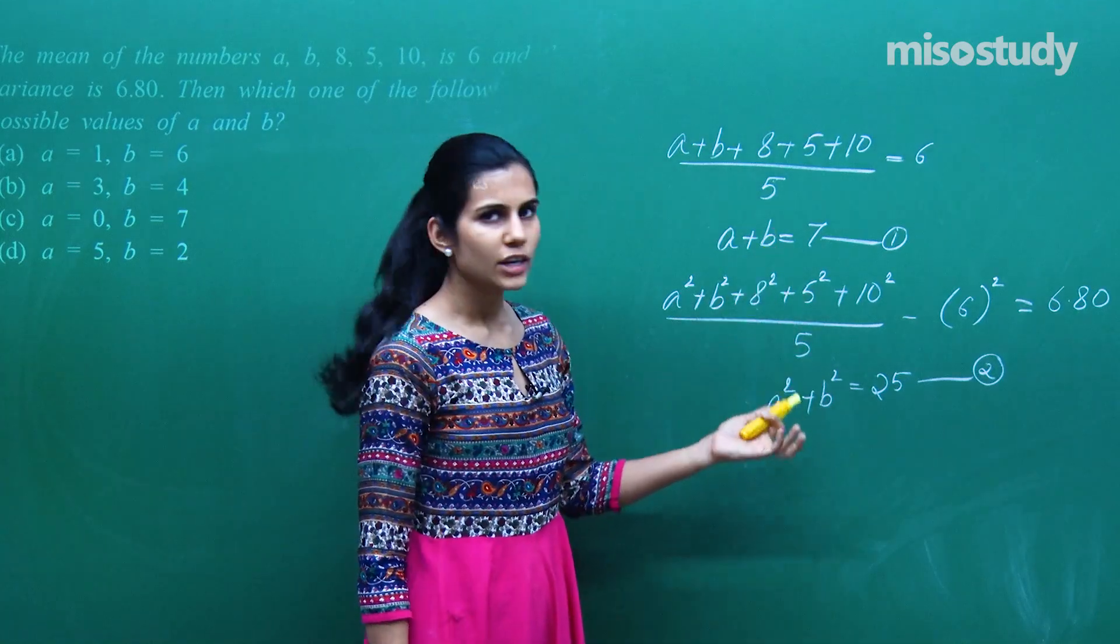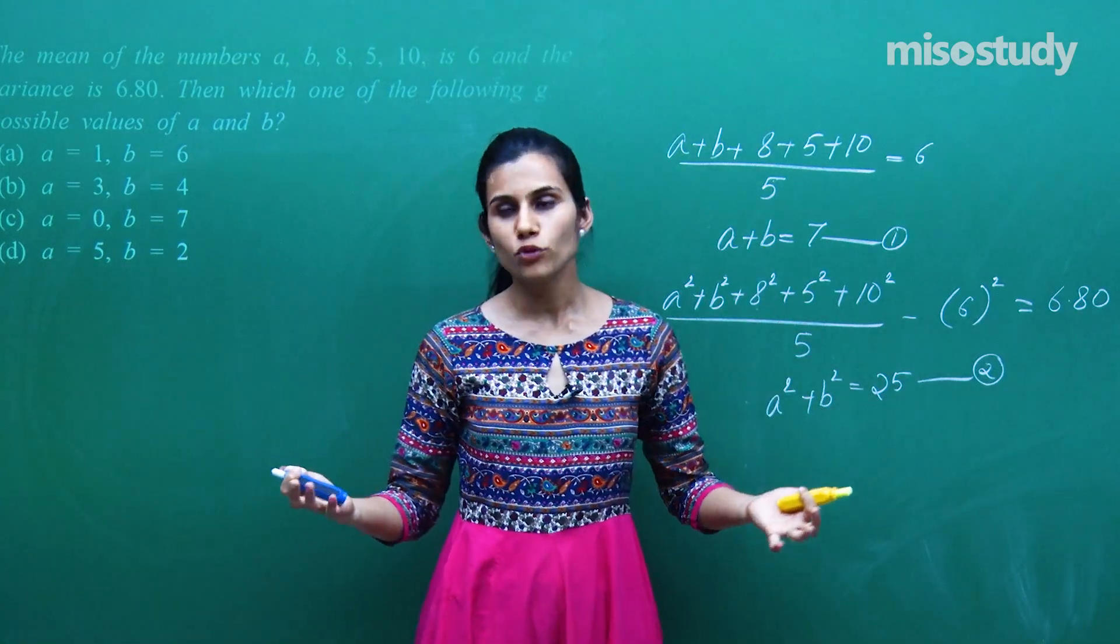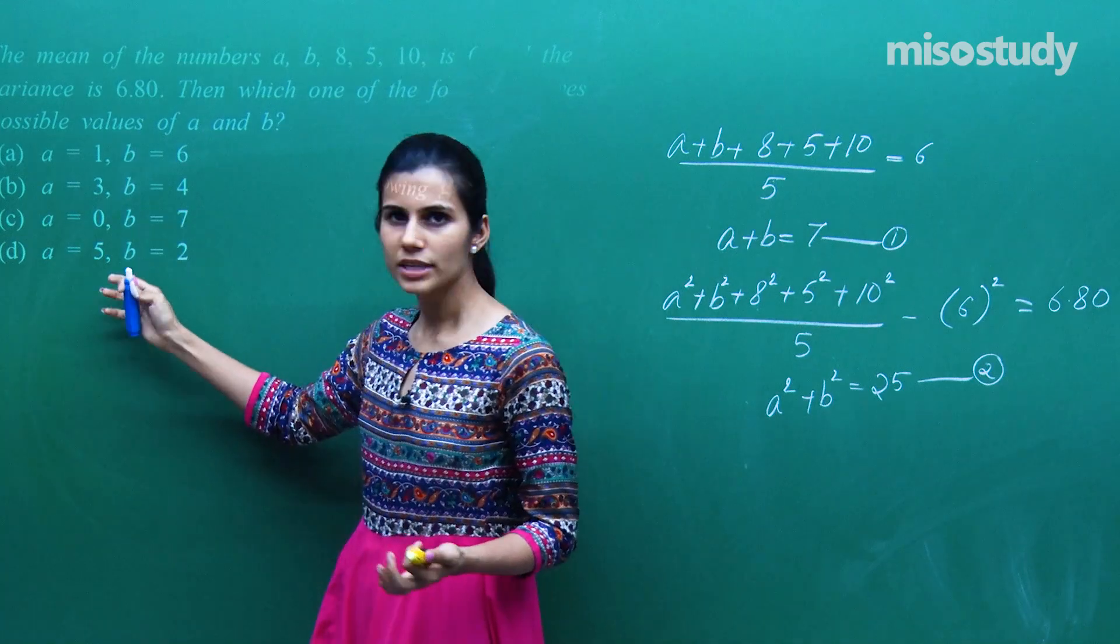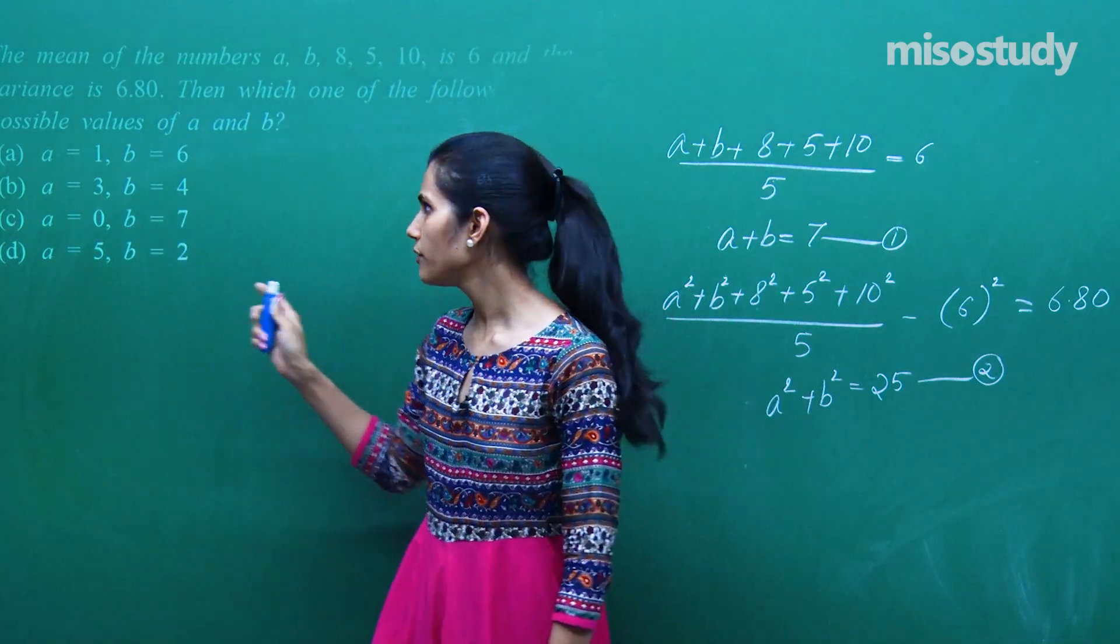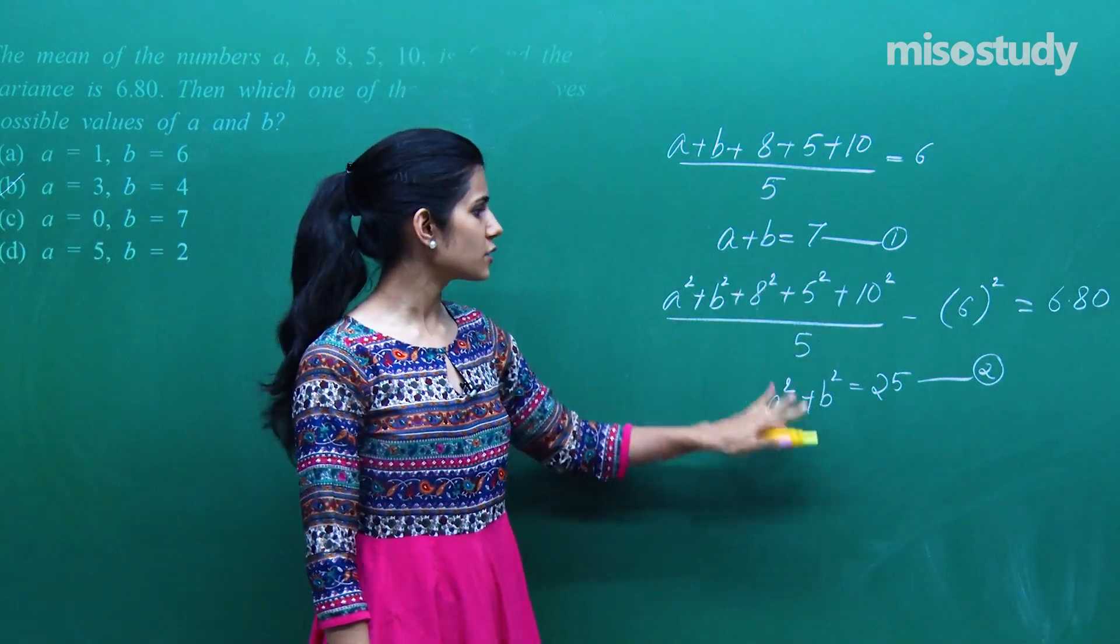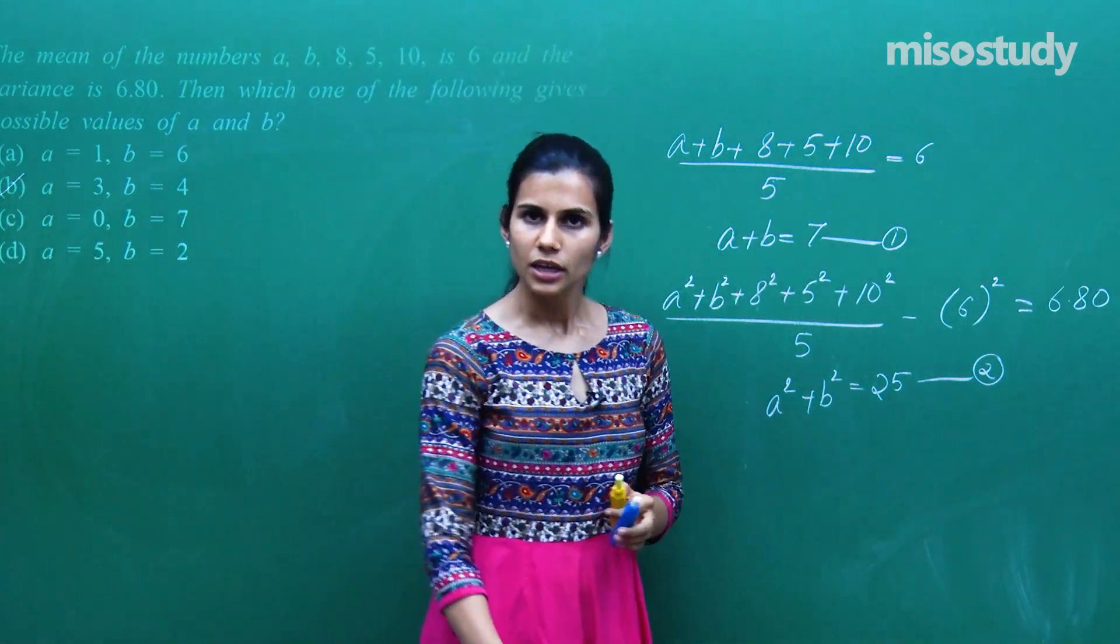Isko resolve karenge aayega a square plus b square is 25. In dono ko resolve karenge se a or b ki value pata chal jayegi but of course hume randomly directions mein move nahi karna humare paas already chaar values hain a b ki. Jo bhi in dono ko satisfy karenge wo mera correct option hai and you will find out a equals to 3 b equals to 4 satisfies this also and satisfies this also.